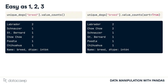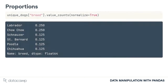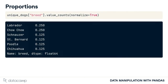To count the dogs of each breed, we'll subset the breed column and use the value_counts method. We can also use the sort argument to get the breeds with the biggest counts on top. The normalize argument can be used to turn the counts into proportions of the total — 25% of the dogs that go to this vet are Labradors.